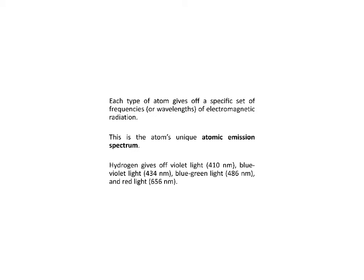Hydrogen gives off violet light, blue-violet light, blue-green light, and red light. You have a gas-discharge tube containing hydrogen going through a prism, producing four spectral lines. On your notes, there's a big square — write down violet at 410 nanometers, then blue-violet with its wavelength, and so on. You can use colors or just write it in black and white; that's what the square on the second page of your notes is for.